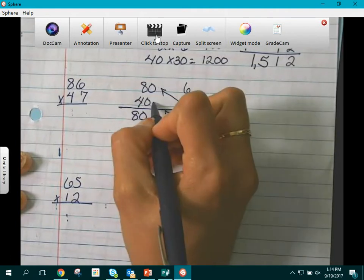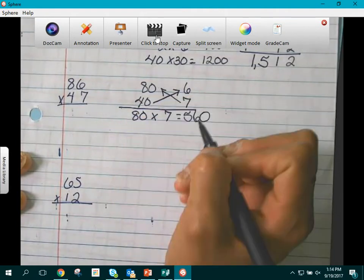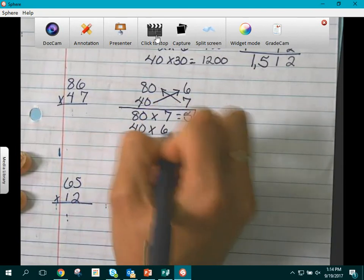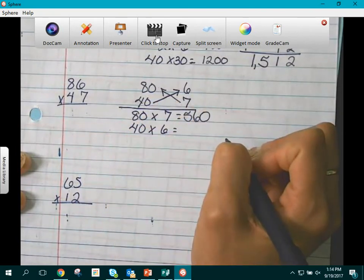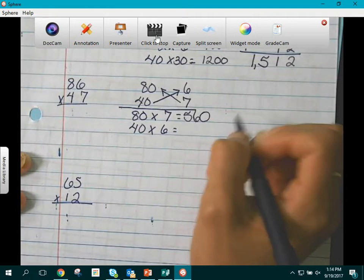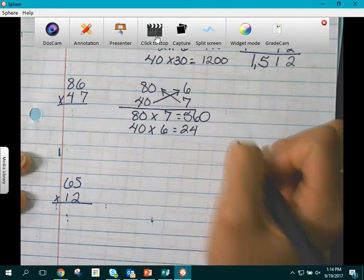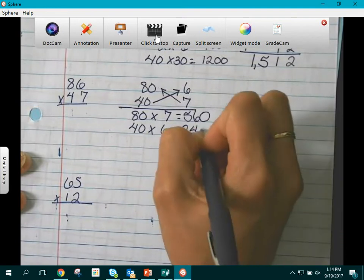We are going to take 40 times 6. So 40 times 6. 6 times 4 is 24. But again, the value is in the tenths. So that would be 240.